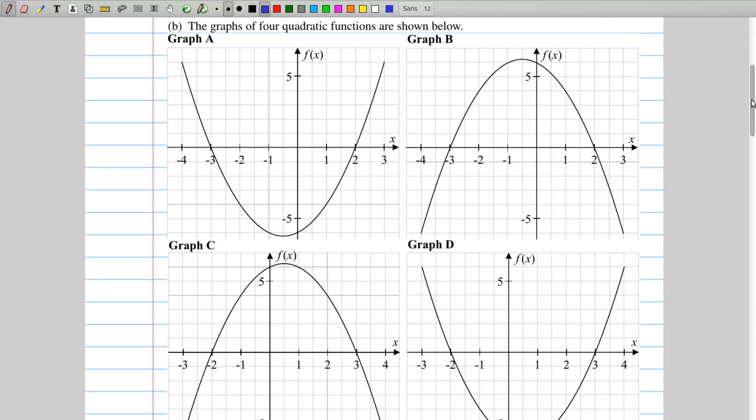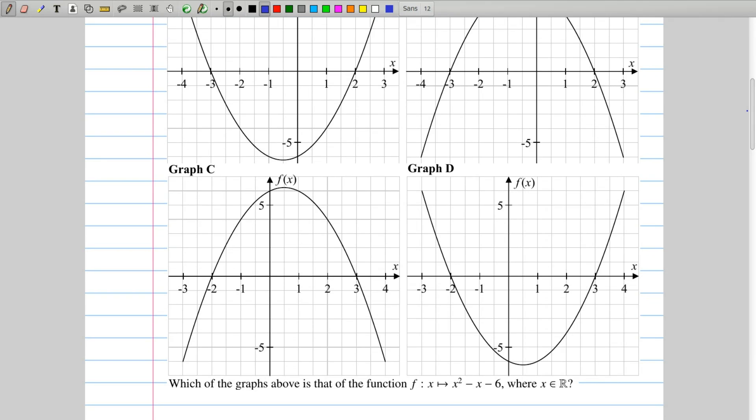So how do we tell which of these graphs represents x squared minus x minus 6? Well, you'll notice that we've got two u-shapes and two n-shapes. So hopefully we should be able to rule out half of these answers by figuring out if the graph is u-shaped or n-shaped. And we can do that very easily by just looking at the x squared term. So this is a plus x squared. And hopefully you know that a plus x squared means that it's a u-shaped graph. If you see minus x squared, then that means it's an n-shaped graph.